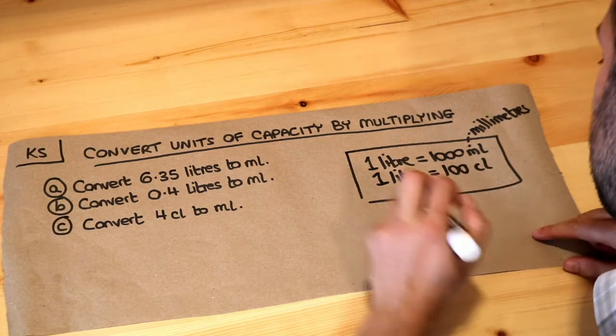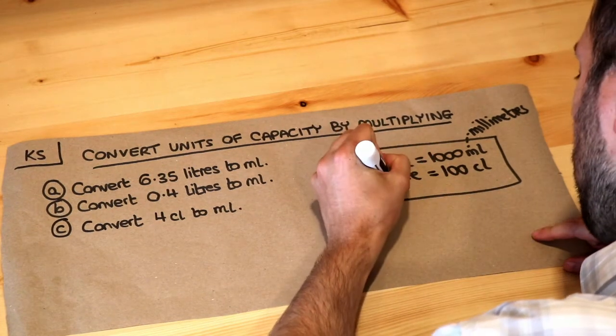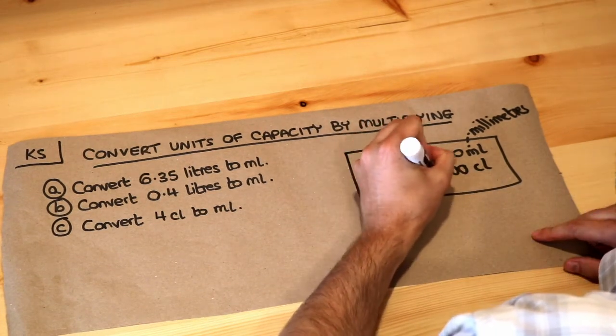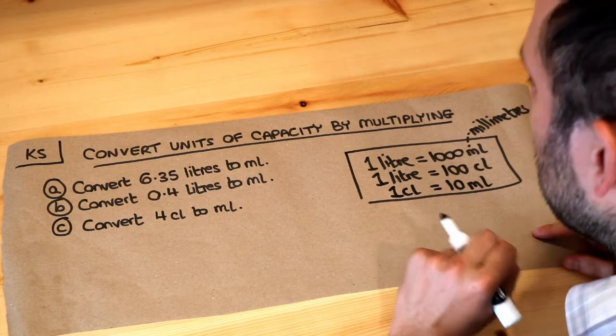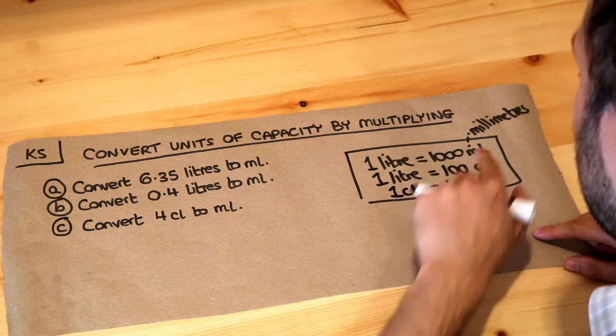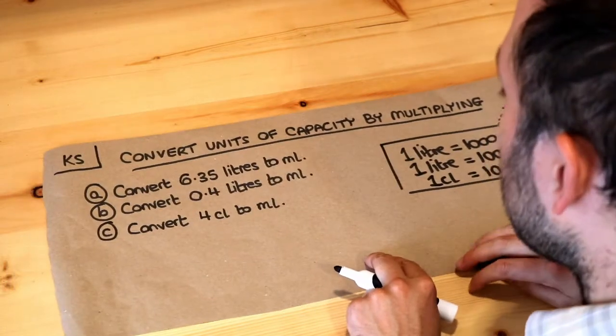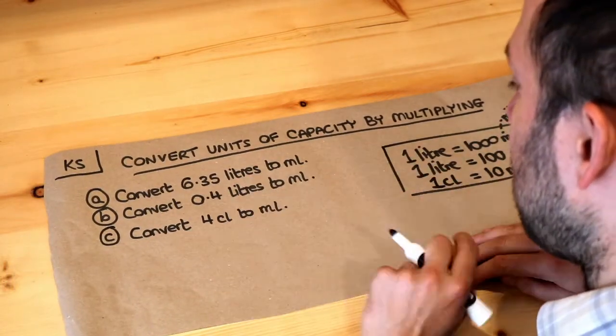Now if you can combine these two units together, you end up that one centiliter is equal to ten milliliters. But centiliters is not a very frequently used unit. You're used to probably seeing milliliters and liters. So let's use these conversions for these problems here.